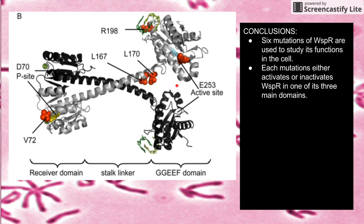In this next slide we can see a protein image of WISP-R. This is the dimer format and there are basically three main regions: a receiver domain, a stalk linker domain which forms the dimer or tetramer form of WISP-R, and then a cyclase domain, which is what makes the CDGMP. In the paper they mutate this protein at six amino acid sites, and each of those mutations will either activate or inactivate WISP-R in one of these three domains.